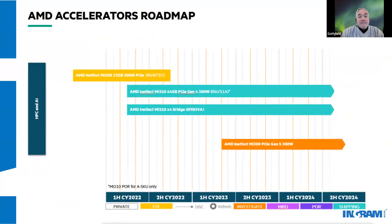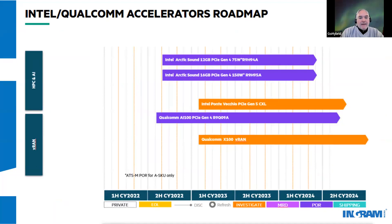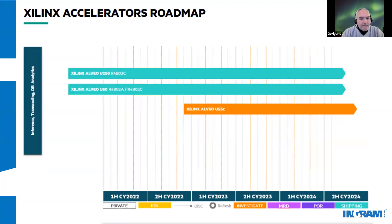Beyond NVIDIA, HPE does offer GPUs from other vendors, such as the AMD Instinct MI line of GPUs for high-performance computing and artificial intelligence. The Intel Arctic Sound and Ponte Vecchio GPUs, also for high-performance computing and artificial intelligence. The Qualcomm 100 series, which are aimed at vRAN use. And the Xilinx Alveo U series for database analytics and artificial intelligence training and inference.